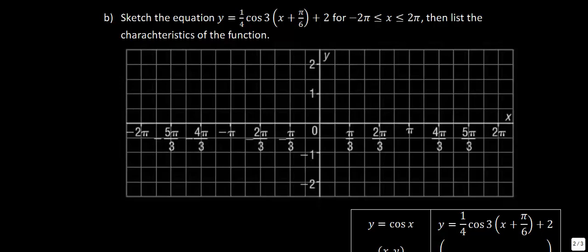The first thing I want to do is graph the regular graph of y = cos(x) in my pink pen. We have a dot right here, it goes through at pi over 2, and we get this point. Going in the opposite direction we get these additional points, and if we connect those dots we get our base cosine function. We're just going from negative 2π to 2π, so that's why I stopped right at those points.